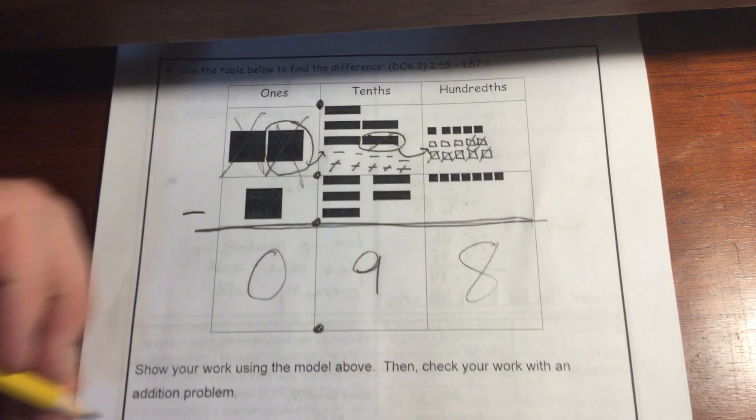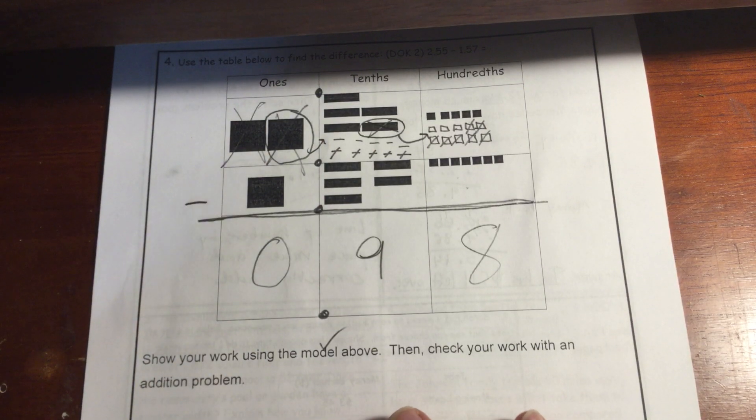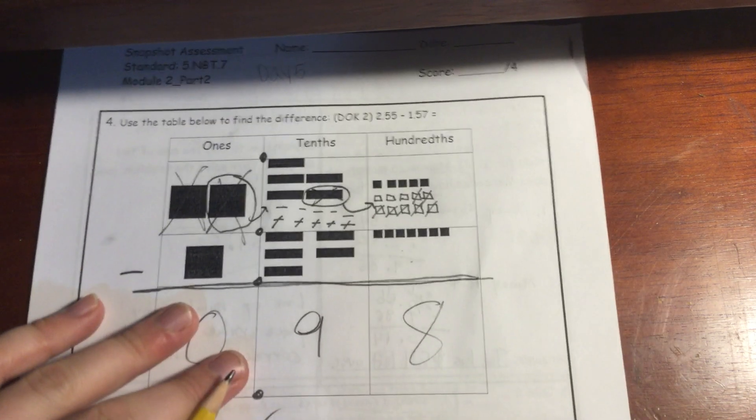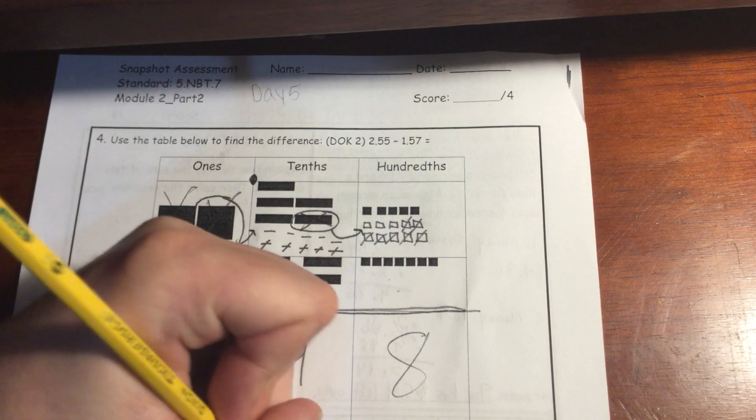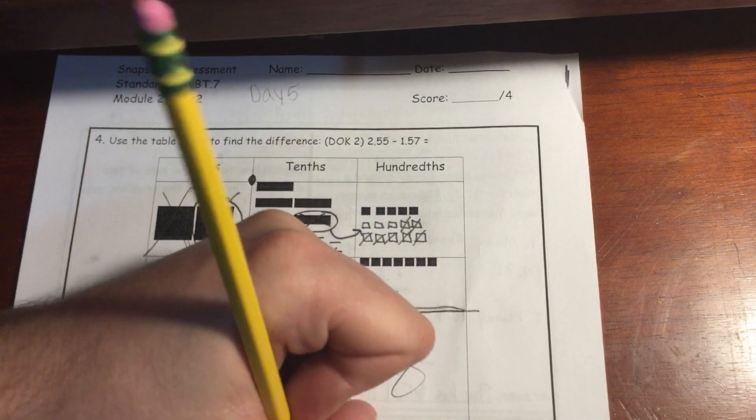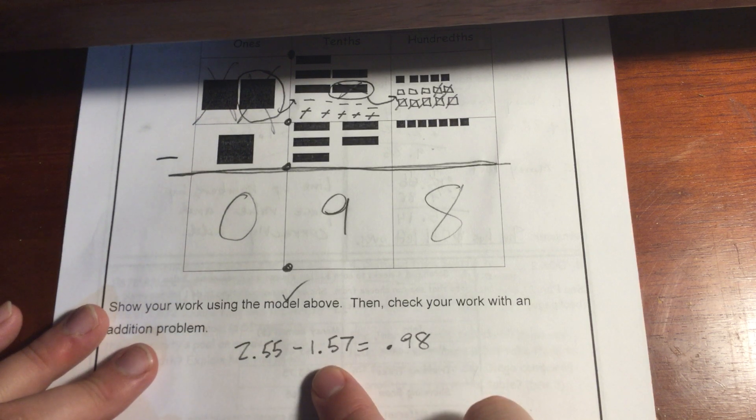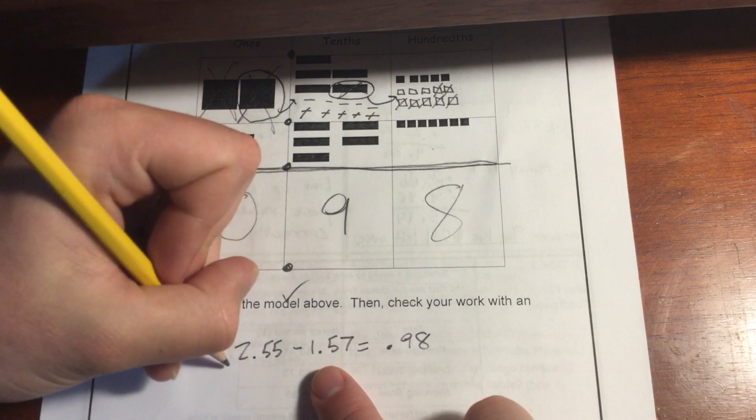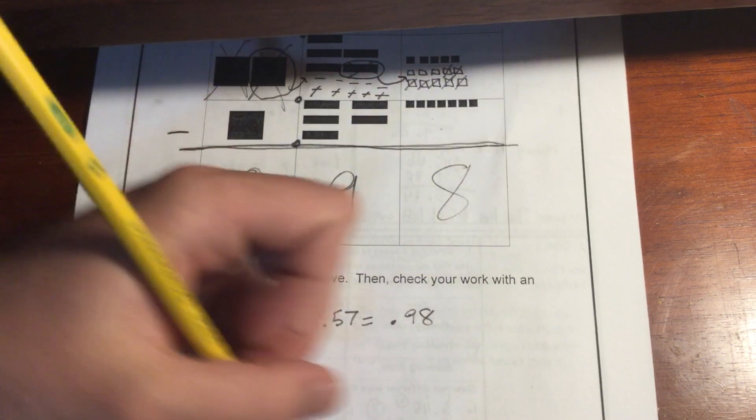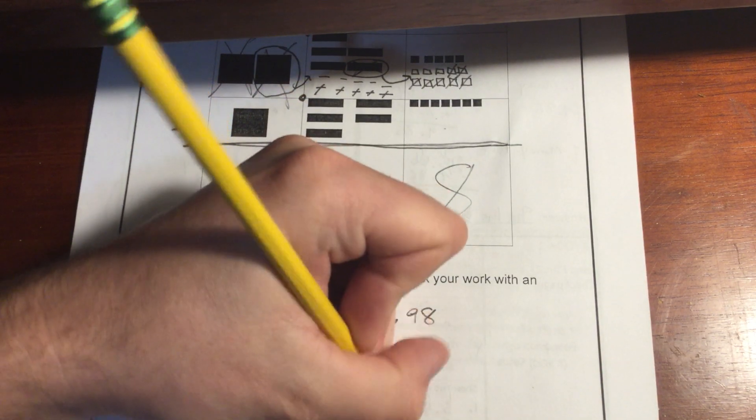And so now what it's asking us is we showed our work with the model above so we can check that off, and then check your work with an addition problem. So we're using the inverse operation. And so what I can do is I have 2 and 55 hundredths minus 1 and 57 hundredths, and we got 98 hundredths. So what I'm going to do now is I'm going to add 98 hundredths to my smaller number that I was subtracting, which would be 1 and 57 hundredths. And it should equal if we did it correctly, 2 and 55 hundredths. So let's try it out.